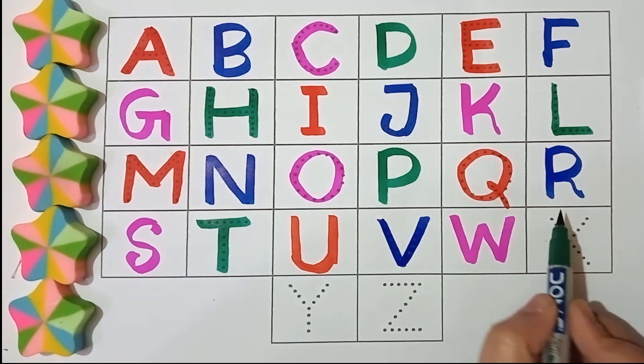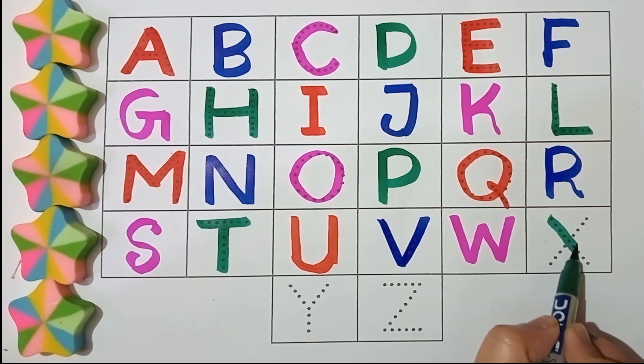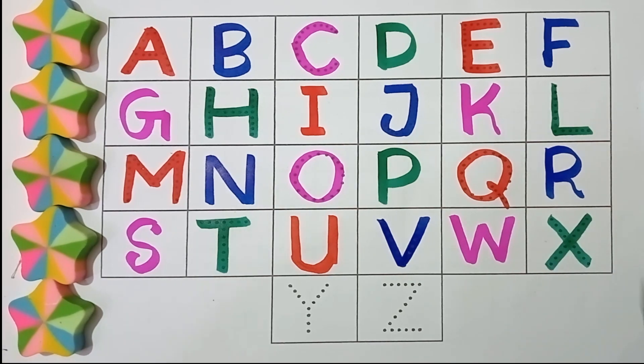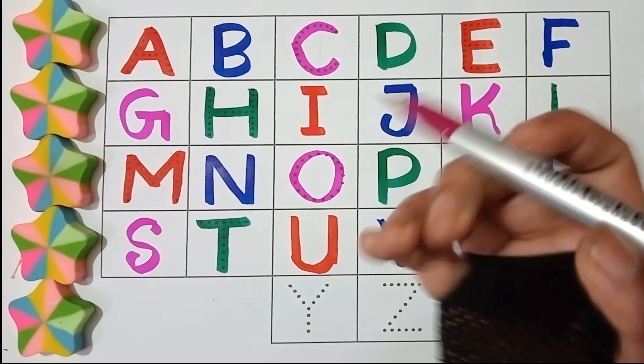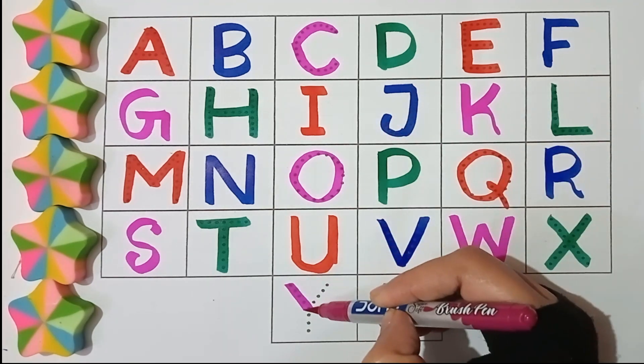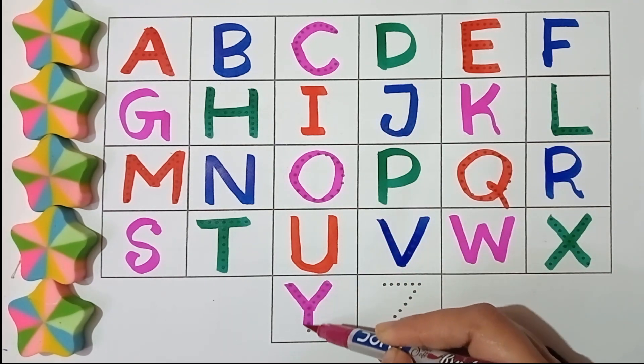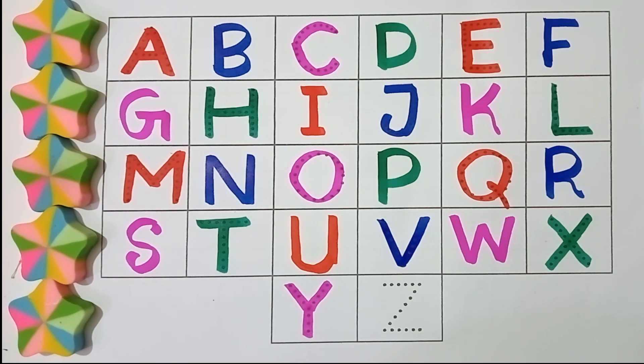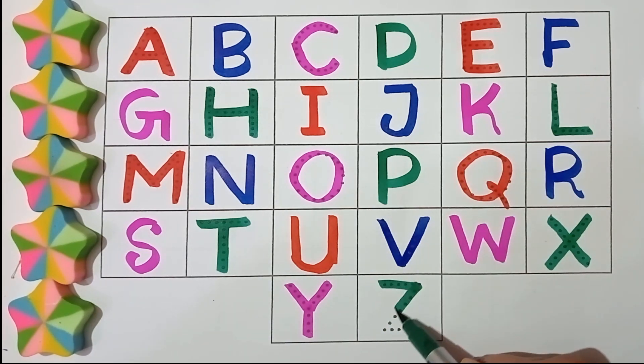Green color. X, X for X. Pink color. Y, Y for Yak, Y. Green color. Z, Z for Zebra, Z.